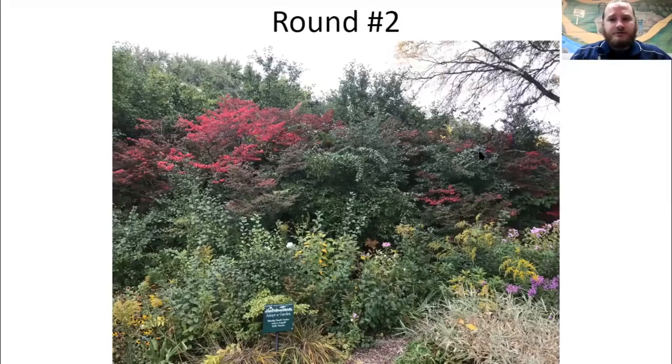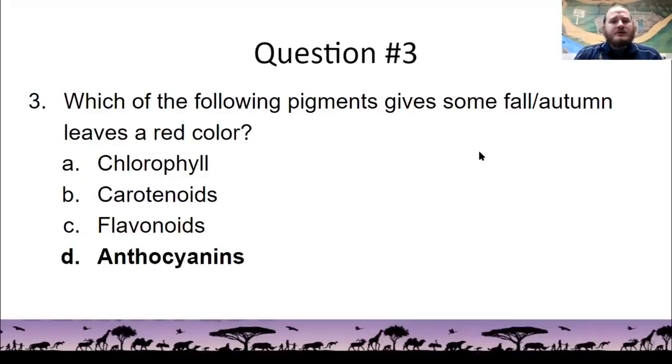All right, round two. These questions are worth two points each. So you got two points for each correct answer. Question number three. Which of the following pigments gives some fall or autumn leaves a red color? The answer is anthocyanins. Now, this is interesting because the yellow and orange colors we might see are caused by two other pigments, carotenoids and flavonoids. And those are always in the leaves. It's just that the chlorophyll, which gives leaves a green color, kind of overshadows them. But as plants stop producing chlorophyll, those yellows and oranges start to emerge. Now, that's different with the anthocyanins because plants will actually start producing those in the fall. And that's what gives them that red color. So it's pretty interesting. And if you take a look at a leaf, you can kind of see how the chlorophyll travels through the leaf by what colors are revealed at what time.